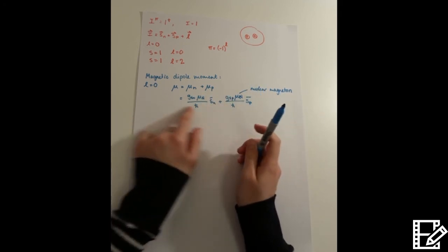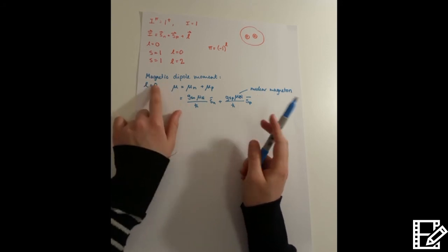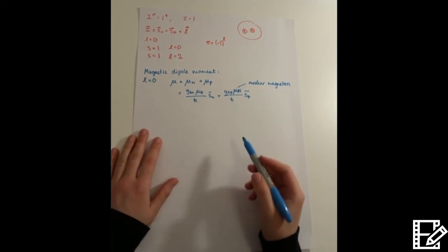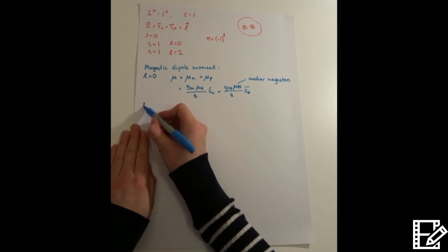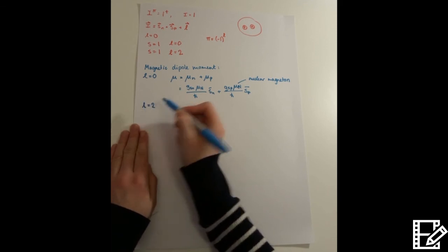And that suggests that, okay, so we must have a lot of this lowest state present. Then you think, okay, well, what if we do have some of this l equals 2 state present?